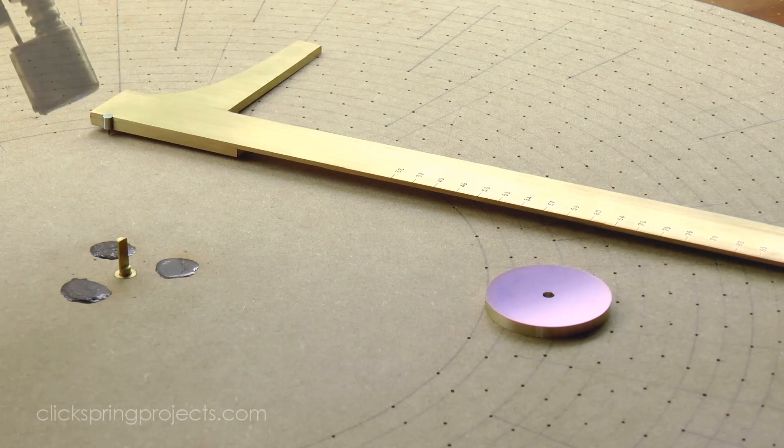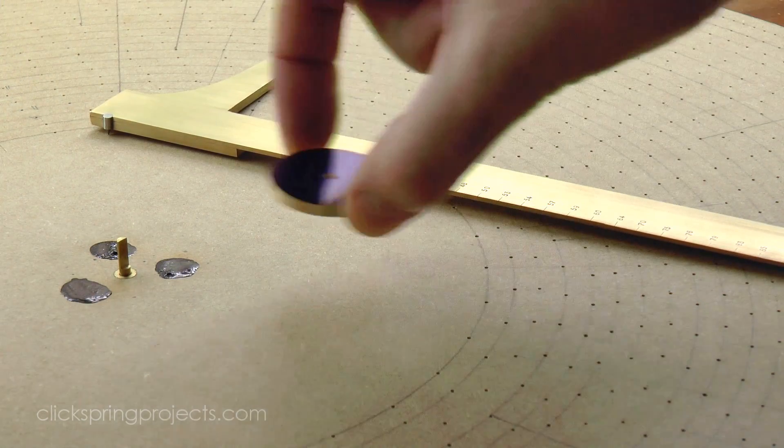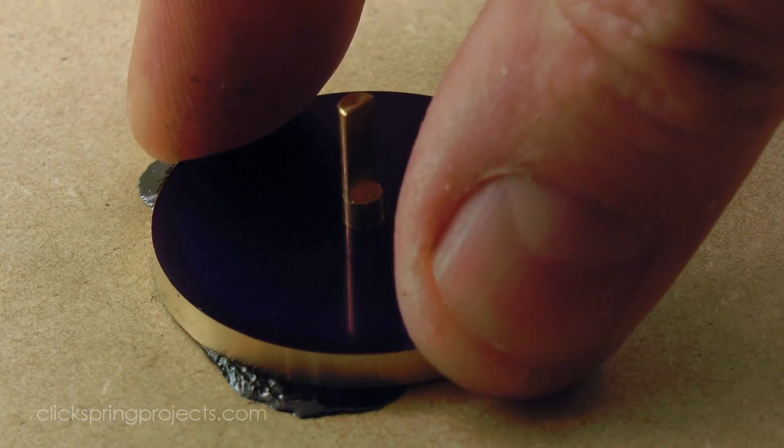I started by marking out the blank with 64 divisions, using the shop made dividing plate shown in a previous video.